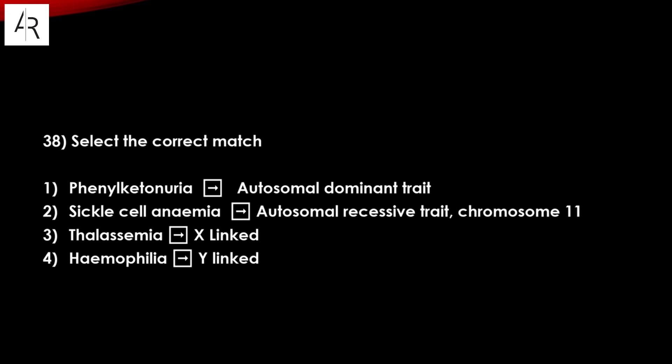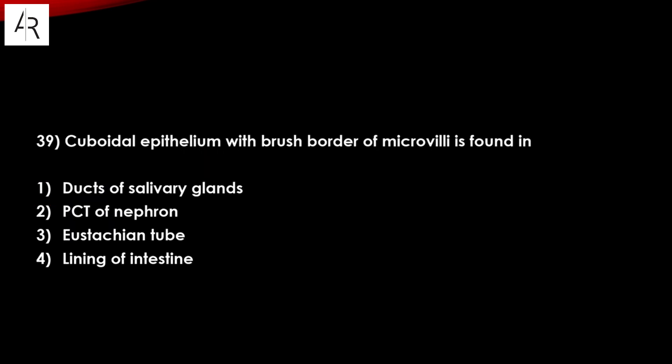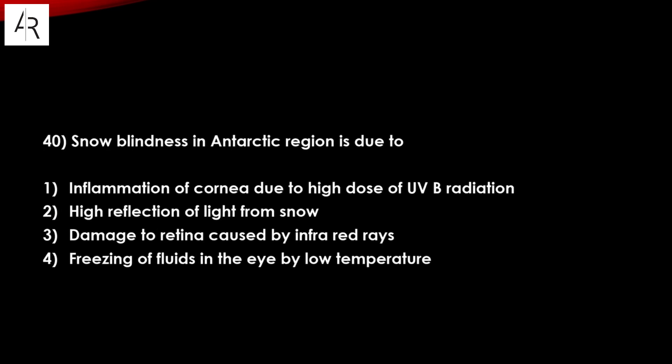Question number thirty-eight: select the correct match. Phenylketonuria — autosomal dominant trait? Not the correct option. Sickle cell anemia — autosomal recessive trait on chromosome 11 — option number two is the answer. Question number thirty-nine: cuboidal epithelium with brush border microvilli is found in the PCT of the nephron — option number two is the answer.